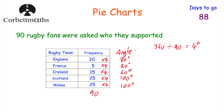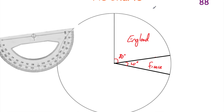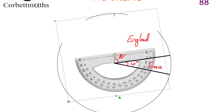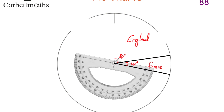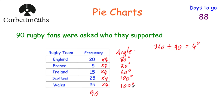Next we've got the Irish fans — a 60 degree angle. We rotate the protractor again with the center on the center of the pie chart and the zero on the previous line, then measure 60 degrees — 10, 20, 30, 40, all the way to 60. Remove the protractor, draw the line, mark the 60 degree angle and label it Ireland. That angle label can be useful if we later need to calculate fractions of fans.